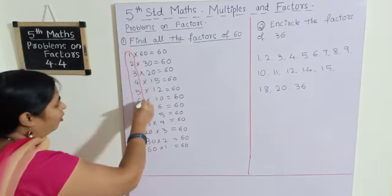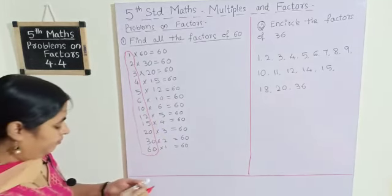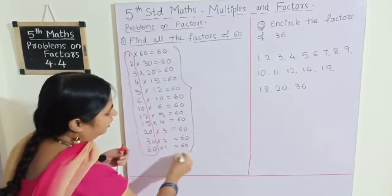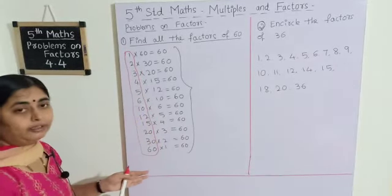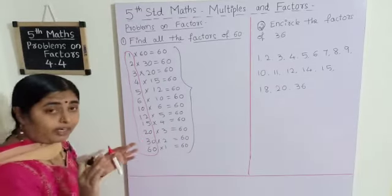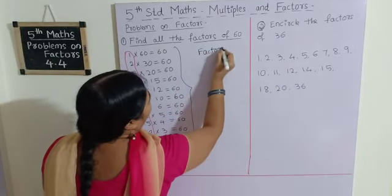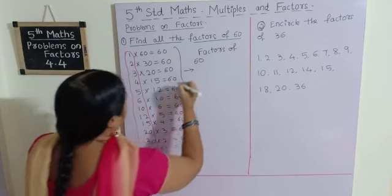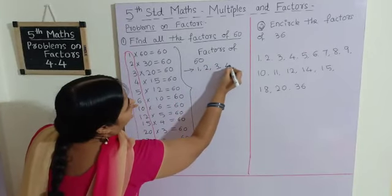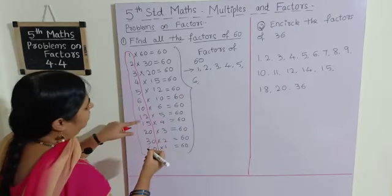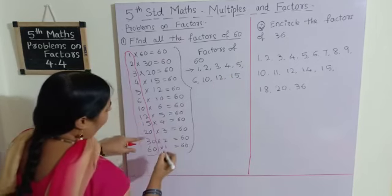This is very easy. We should go from the table of 1 and we can find out all the factors without skipping any factor. This is the easiest method where we can find the factors without missing any. Therefore, factors of 60 are: 1, 2, 3, 4, 5, 6, 10, 12, 15, 20, 30, and 60.